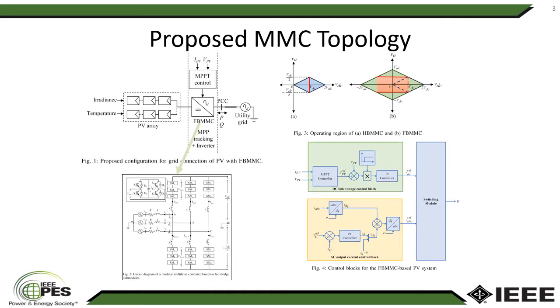So figure one shows the proposed configuration for grid connection of photovoltaic systems through the proposed full-bridge submodule based MMC, hereafter called FBMMC. The PV array in the left represents a PV system that takes irradiance and temperature as input and generates DC power as output.